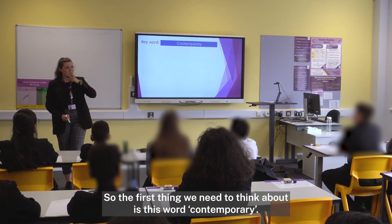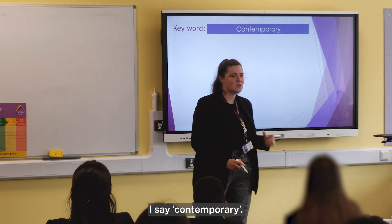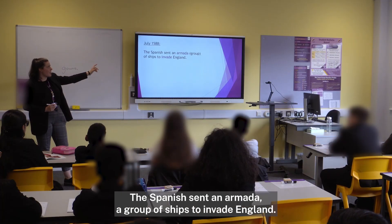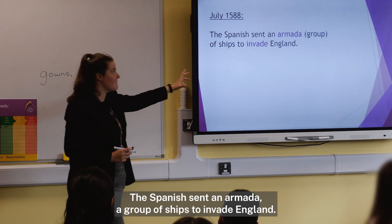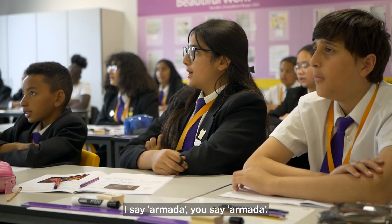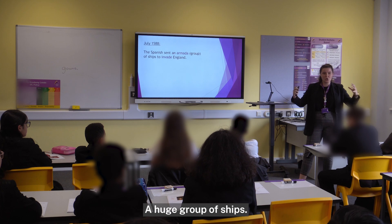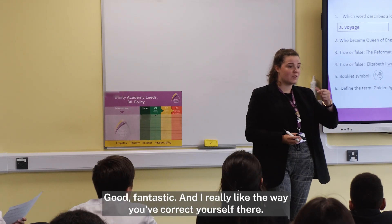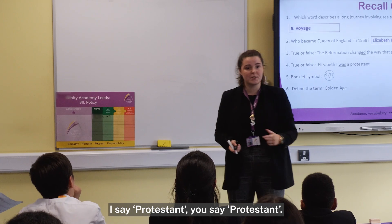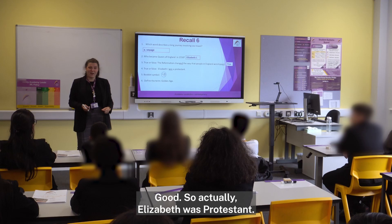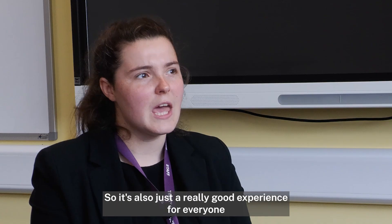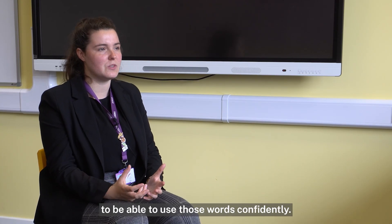The first thing we need to think about is this word 'contemporary' — I say contemporary, you say contemporary. The Spanish sent an armada — a group of ships — to invade England. I say armada, you say armada. An armada is a huge group of ships. He didn't change their religion, they were still Christian, but he changed their sect to Protestant — I say Protestant, you say Protestant. Elizabeth was Protestant. We might then do a true and false quiz to check correct application — it's a really good experience for everyone to use those words confidently.